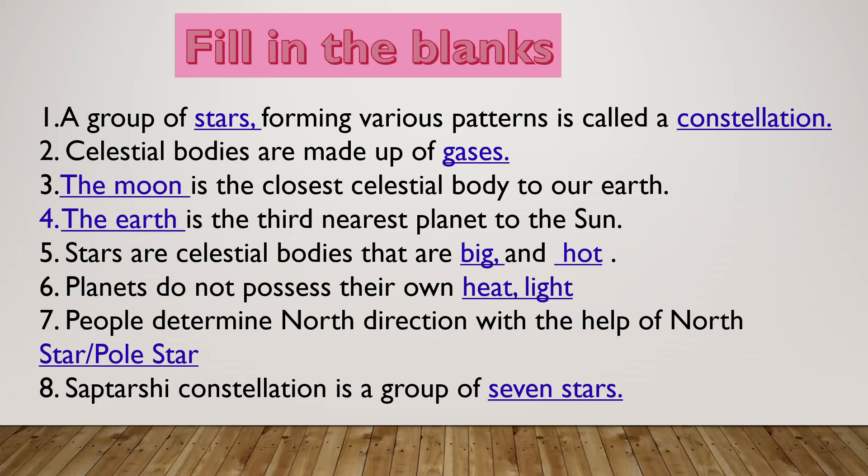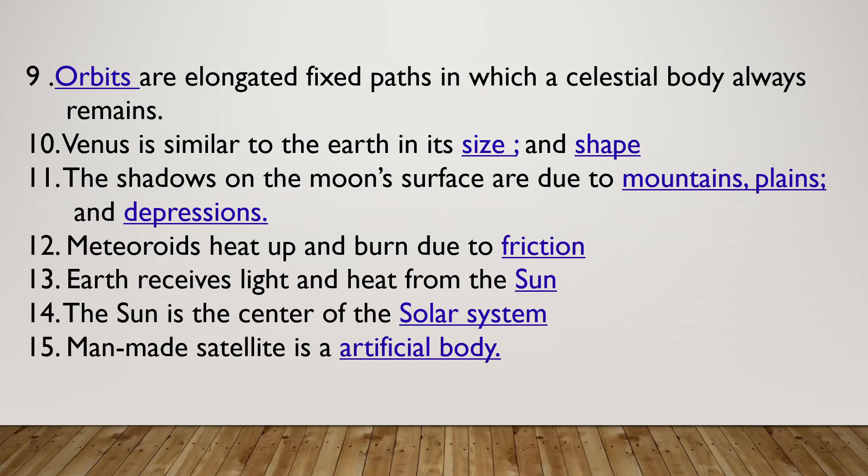People determine direction with the help of the North Star or North Pole Star. The Ursa Major constellation is a group of seven stars near the north pole, also known as Saptarishi.